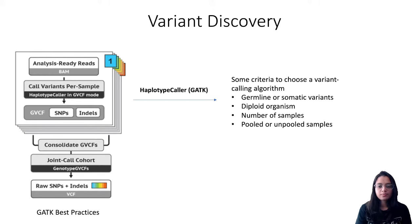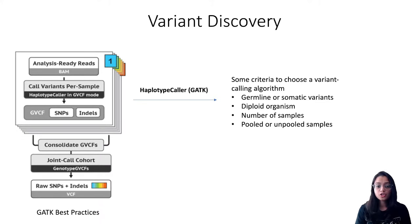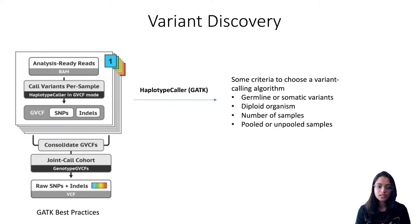The second part of this pipeline is variant discovery. We apply a variant calling algorithm on the analysis-ready reads. We are going to use HaplotypeCaller to call variants. The choice of variant calling algorithm depends on criteria such as whether you want germline or somatic variants, the ploidy of the organism, number of samples, and whether samples are pooled. For today's demonstration, we want germline variants from a diploid human sample with one sample, so the choice is HaplotypeCaller.